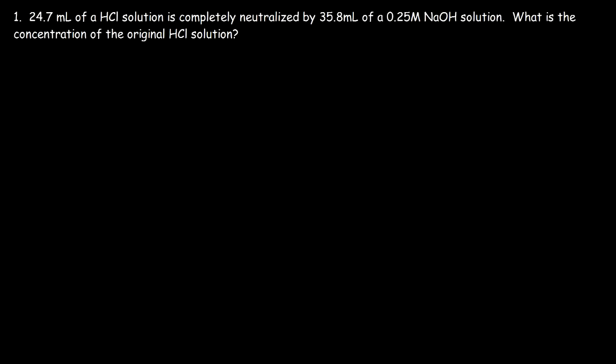In this video we're going to focus on solving acid-base titration problems. 24.7 milliliters of an HCl solution is completely neutralized by 35.8 milliliters of a 0.25 molar sodium hydroxide solution. What is the concentration of the original HCl solution? We're going to find the answer using two methods: using an equation and by dimensional analysis.